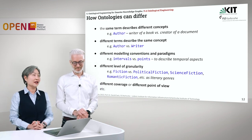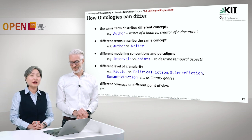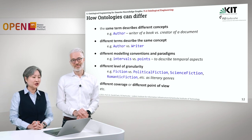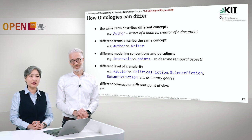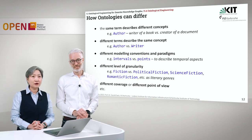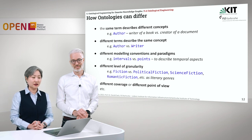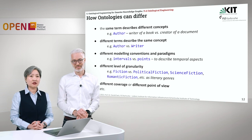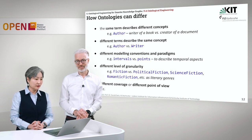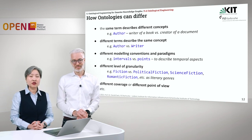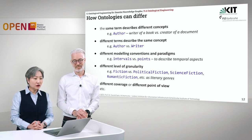Here we have a list of ways in which ontologies can differ. The first one is the same term describing different concepts. For example, the term "author" — it can be the writer of a book or it can be the creator of a document.